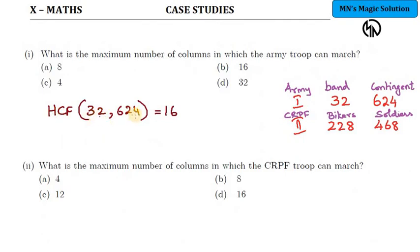So HCF of 32 and 624. For the army people, it is 16. So totally 16 such columns to organize. You can imagine in the band of people, 32 are there, they will be organized in 2 rows. So 16 plus 16, 32.